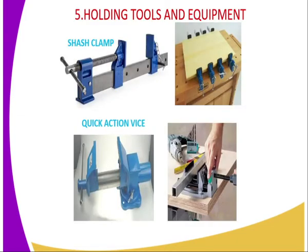The sixth category of workshop tools is the holding tools. We have several examples. The first one is the sash clamp, and then we have the quick action vise. These two devices are normally used when holding a piece of work when working in the workshop.